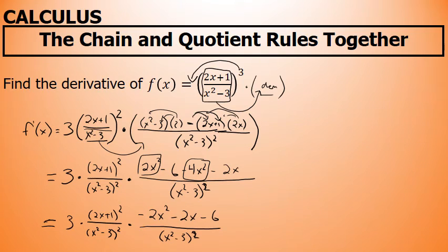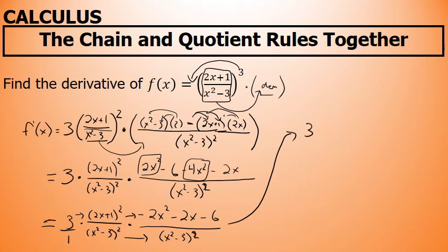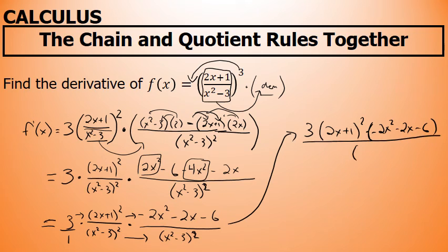The denominator is squared. At this point, I'm going to multiply the numerators and the denominators. The coefficient of 3 in the front can be thought of as 3 over 1, so that's part of the numerator: 3 times 2x plus 1 squared times negative 2x squared minus 2x minus 6, all over the denominator. In the denominator, I have x squared minus 3 to the second power times x squared minus 3 to the second power, and their product is x squared minus 3 to the power of 2 plus 2. When you multiply the same base, you add the exponents, so that becomes the fourth power.